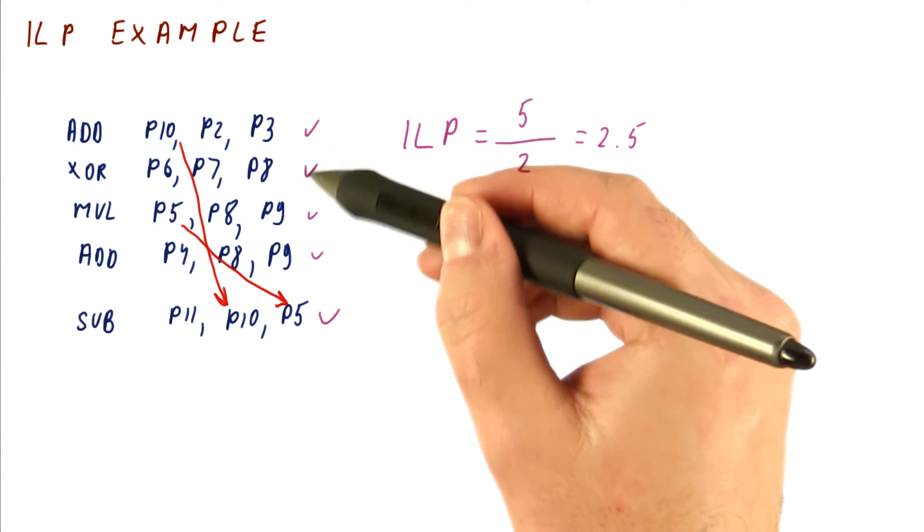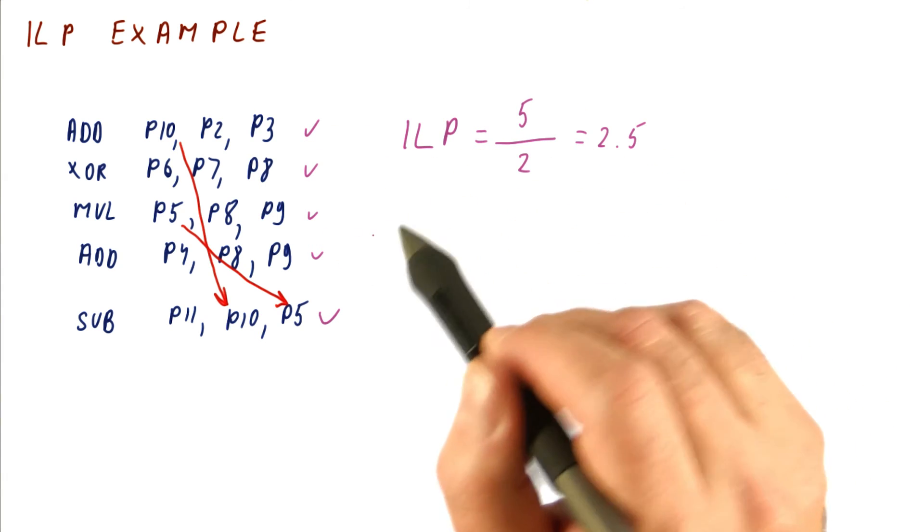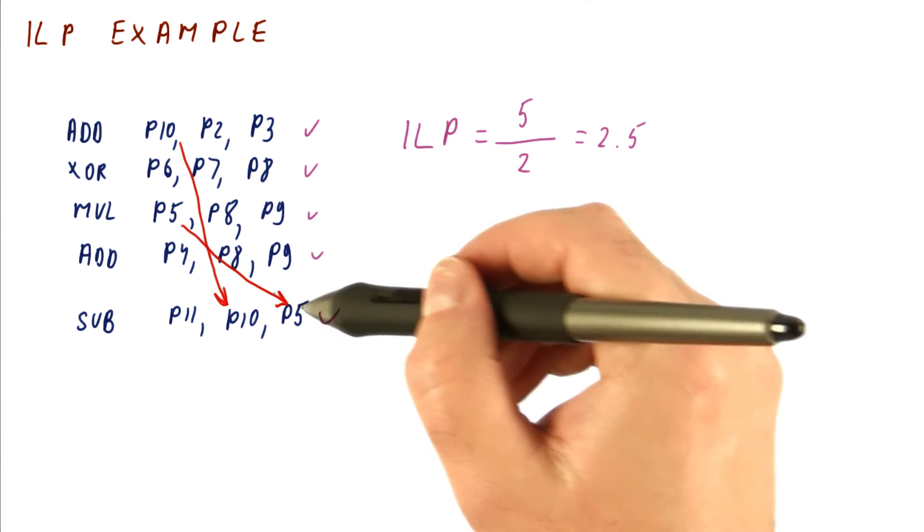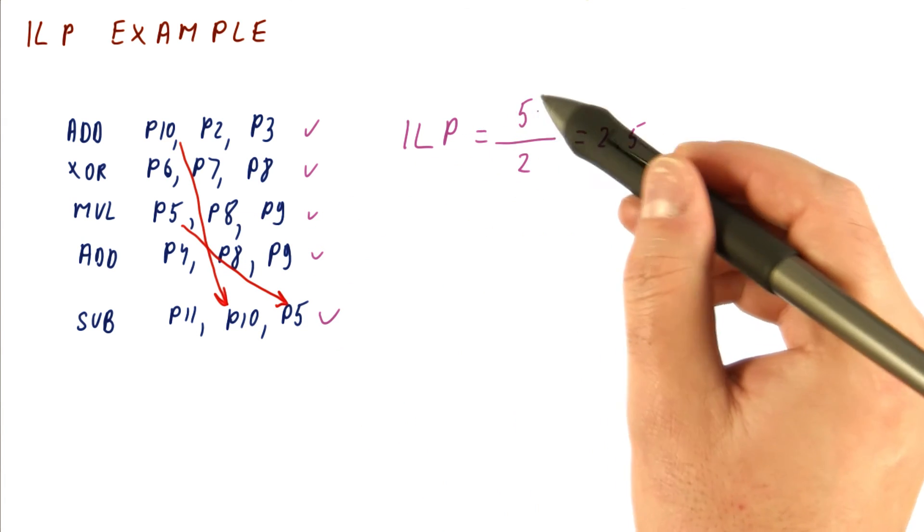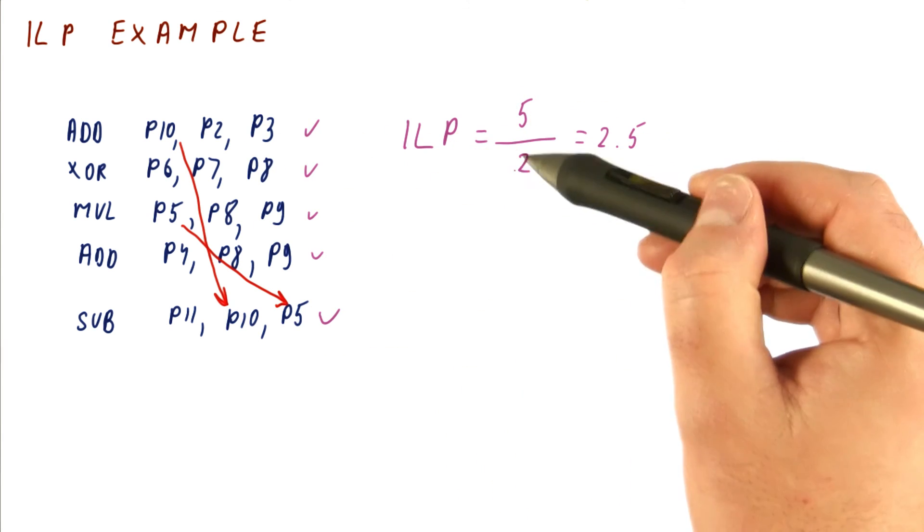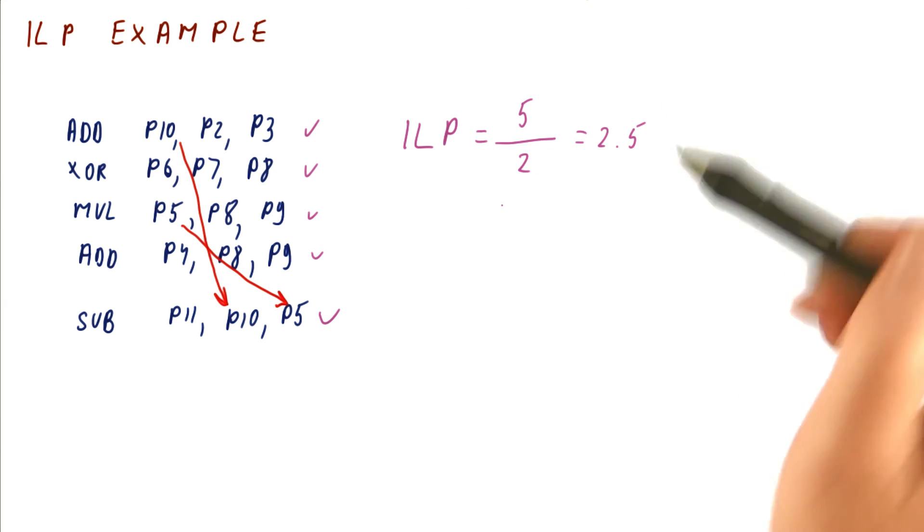Second, when checking this off, be mindful to remember how many cycles you're computing and also what has been done. And then just be careful to divide the right thing with the right thing. So it's five instructions over two cycles, not the other way around.